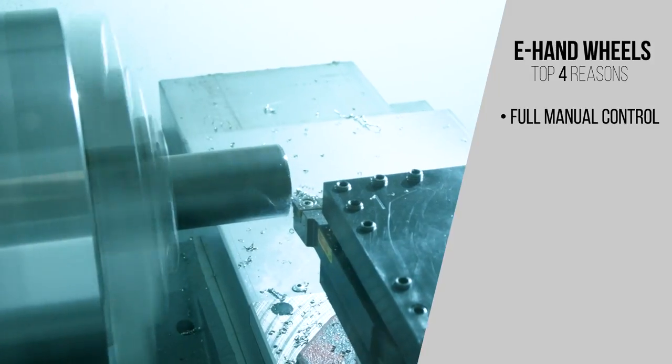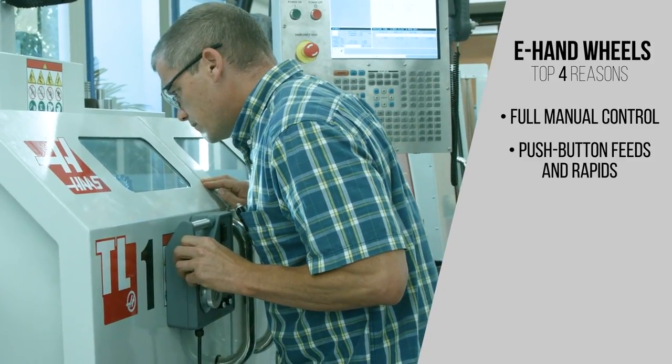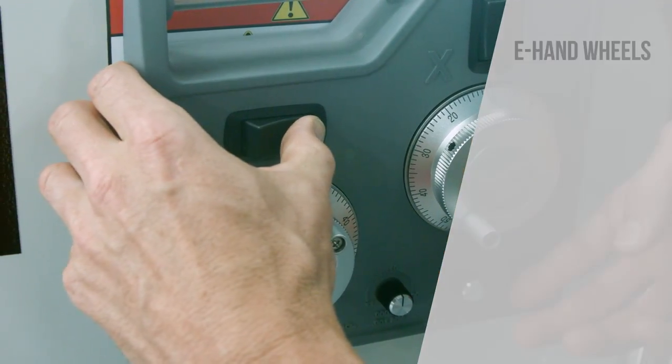E-Handwheels give you full manual control. You get push button feeds and rapids, jog chamfer with the feed button, and adjust jog feed at the unit.